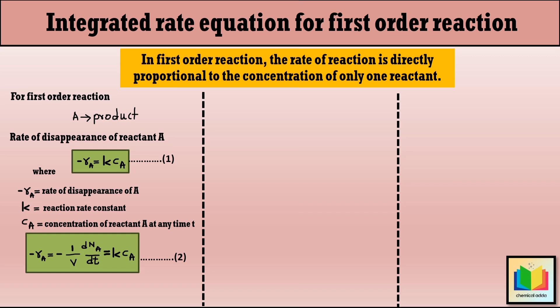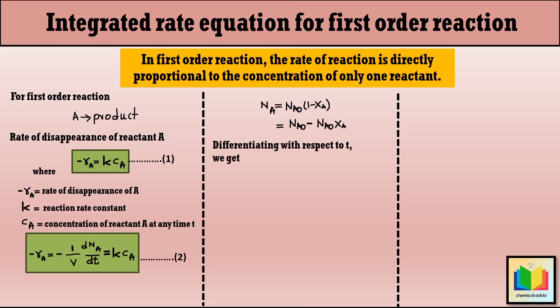As we know, the number of moles of reactant A at any time T is given by: N_A equals N_A0·(1 − X_A), where X_A is the conversion of reactant A at time T, and N_A0 is the initial moles of A. Differentiating this equation with respect to T, we get: dN_A/dT equals minus N_A0·(dX_A/dT).